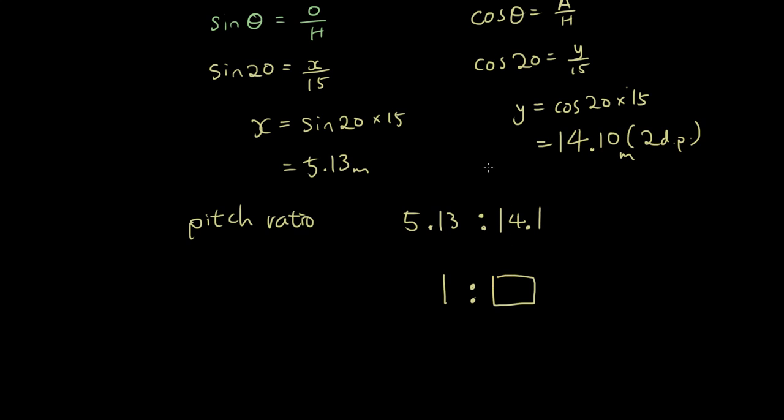That's not the simplest form. We want the ratio to say one to something. In order to figure out this number, we find out how we get 14.1 from 5.13. So I'm going to put into the calculator 14.1 divided by 5.13 and see what that answer is.